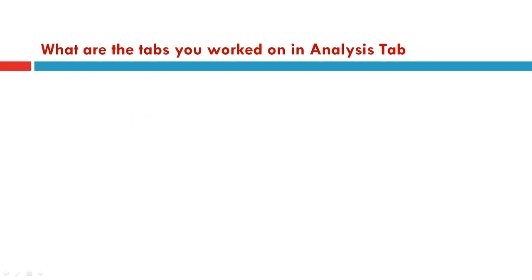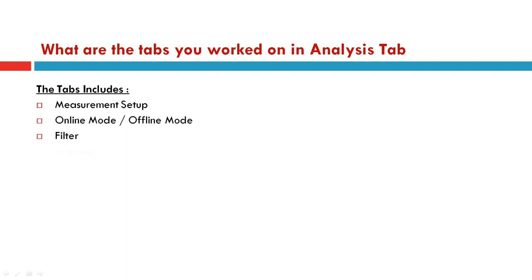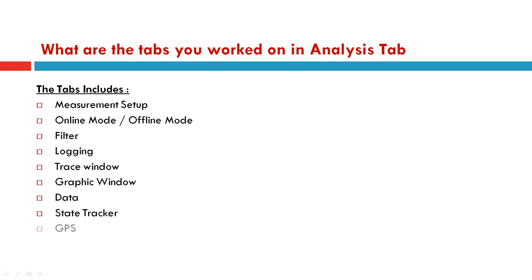For the analysis tab question, there are several tabs in CANoe. You can say: the tabs I worked on include measurement setup, online/offline mode, filters, logging, trace window, graphic window, data window, state tracker, GPS, video, and scope. Whatever tabs you have actually worked on, mention only those. For example, if you worked on only four of these, say 'among these tabs I worked on these four' — that keeps your answer genuine.